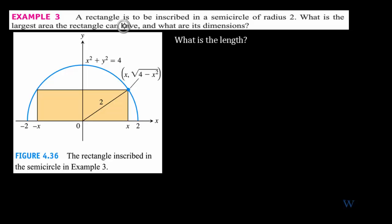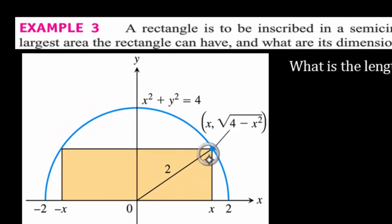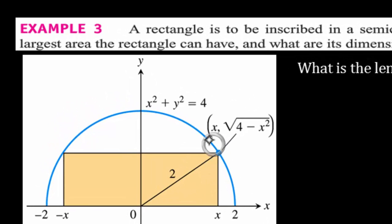A rectangle is to be inscribed in a semicircle of radius 2. What is the largest area the rectangle can have, and what are its dimensions? So let's look at what's going on — you have a rectangle inscribed inside a semicircle.